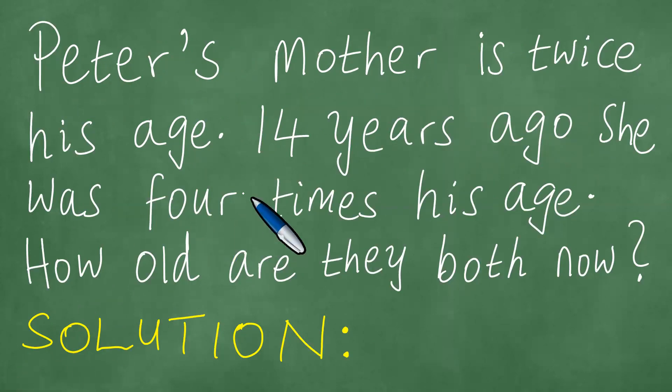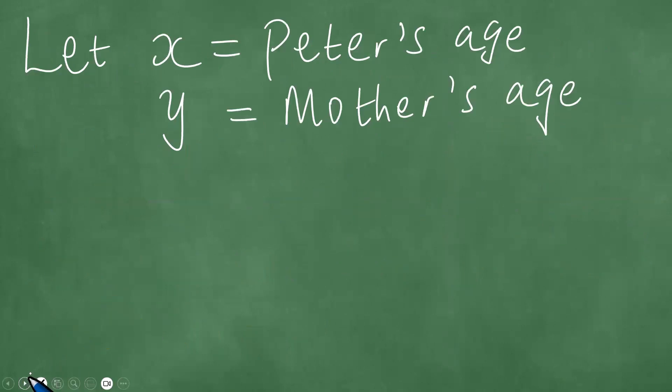The first part of the question says Peter's mother is twice his age. So in other words, if we look at the mother and Peter, we understand that the mother is twice his age. And therefore, to effect an equality here, we multiply these by two and equate the two parts.